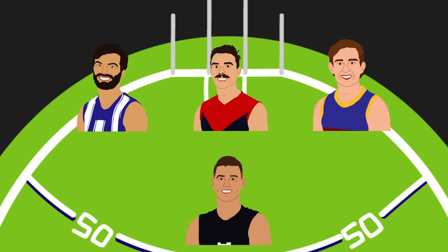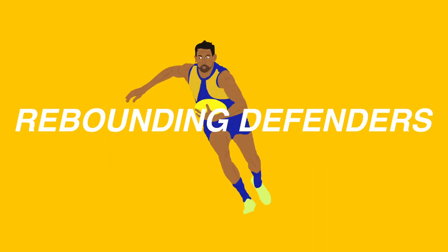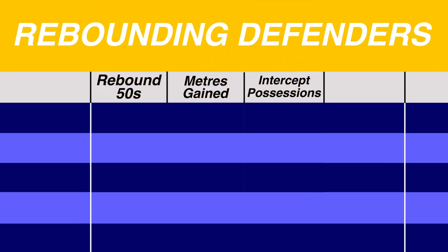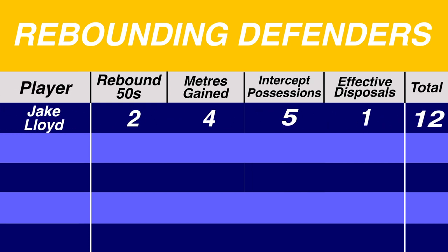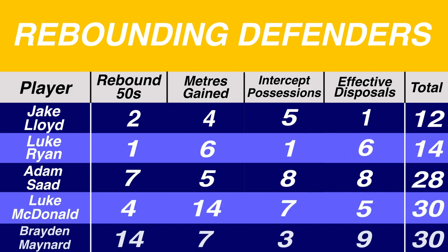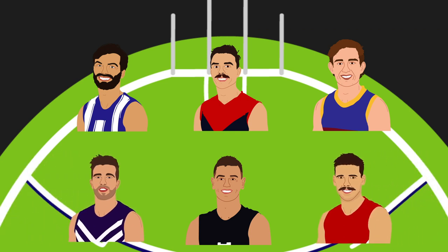Finally, the last two spots on the field were given to halfback flankers who were able to lead the charge out of defence and propel the team forward. To represent success in this area, we chose rebound 50s, metres gained, intercept possessions, and effective disposals. Jake Lloyd was the best overall, scoring 12 points, narrowly defeating Luke Ryan who won 2 of the categories. Admittedly, AFL.com.au had classified Ryan as a key defender, but at just 186cm, we felt his numbers justify selection as the 2nd halfback flanker.